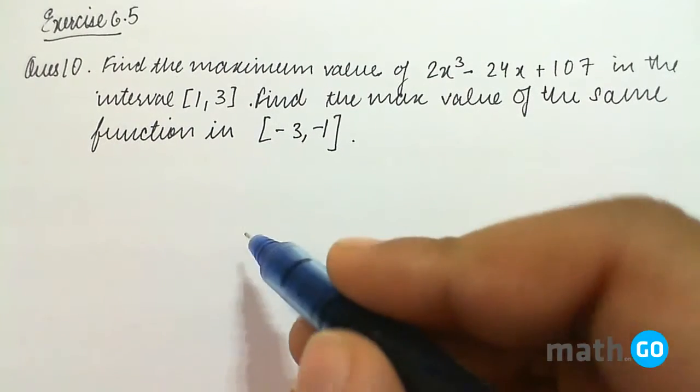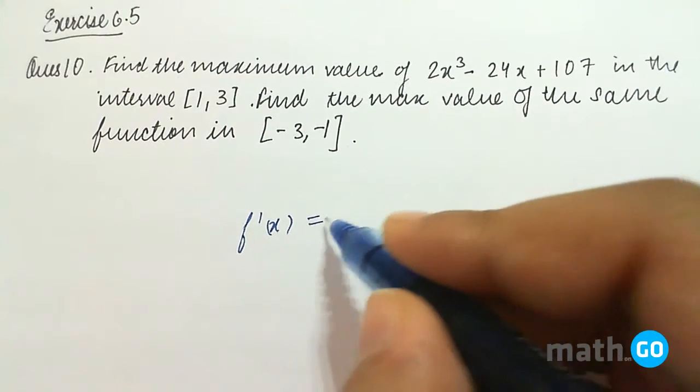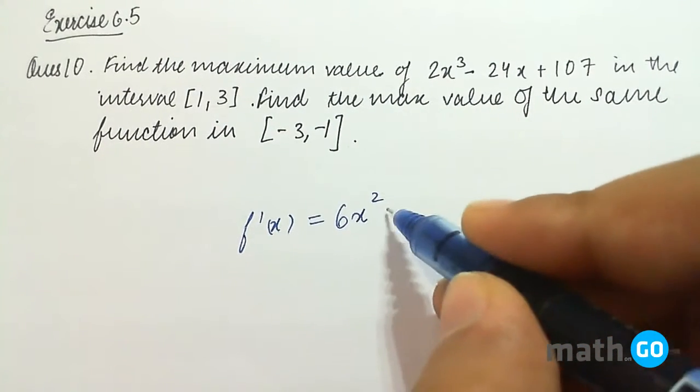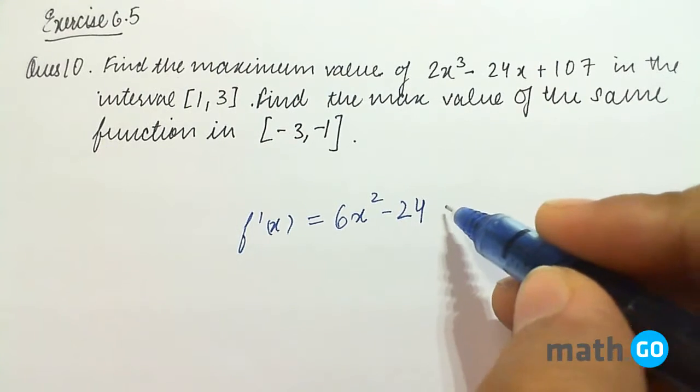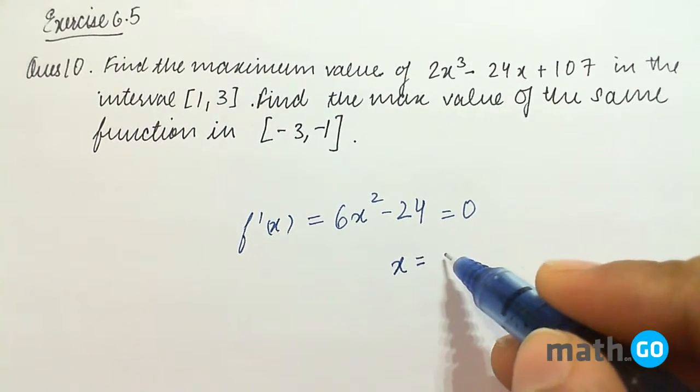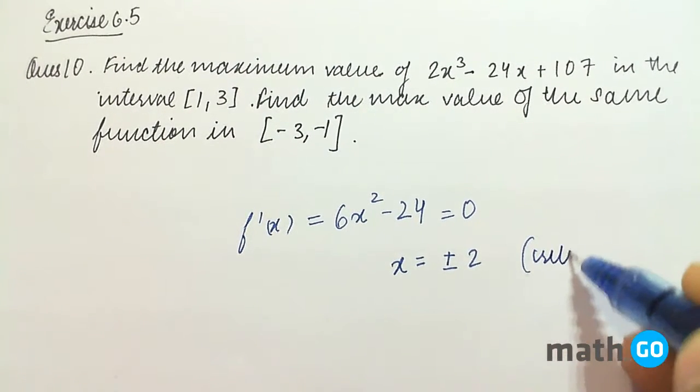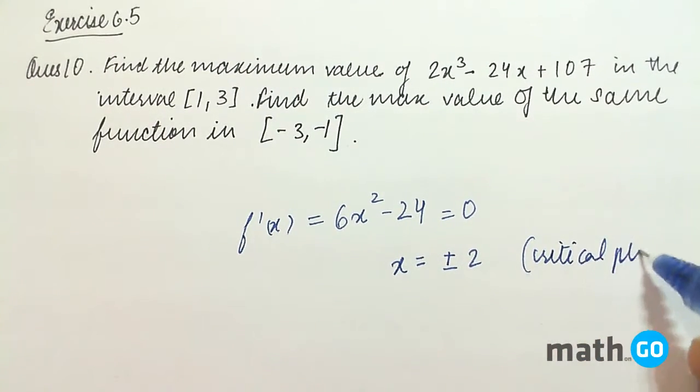First of all, finding f dash x. So f dash x would be equal to 6x square minus 24 and putting it equal to 0, we get x equals to plus minus 2. That are the critical points.